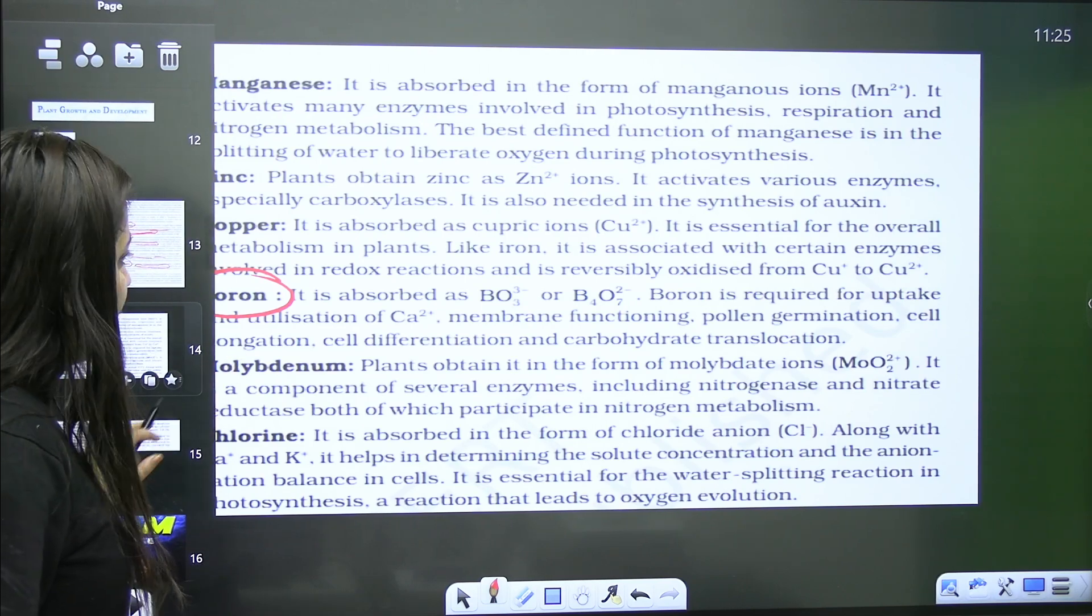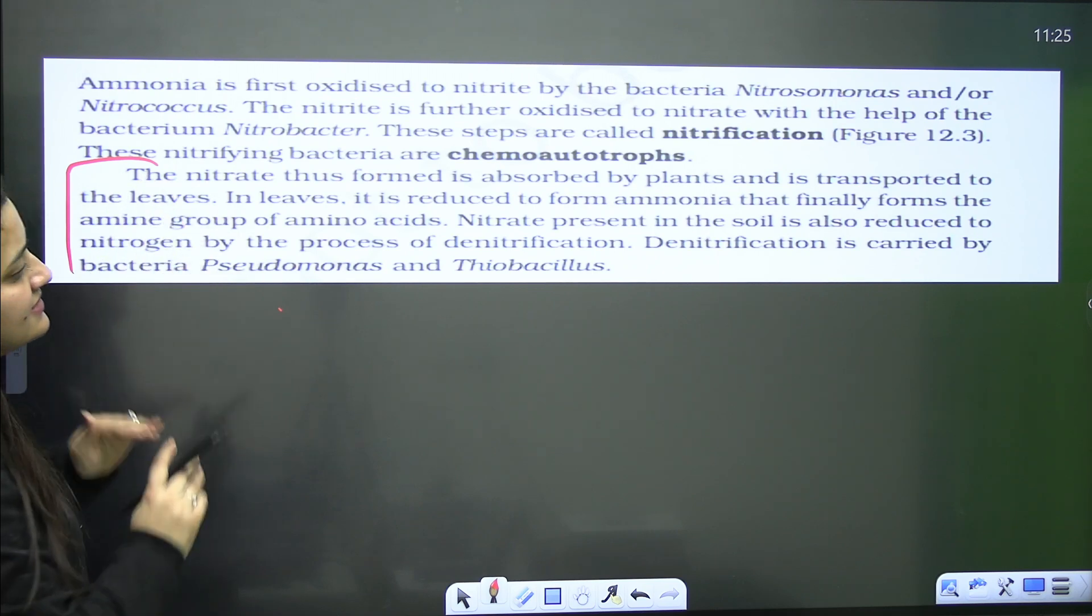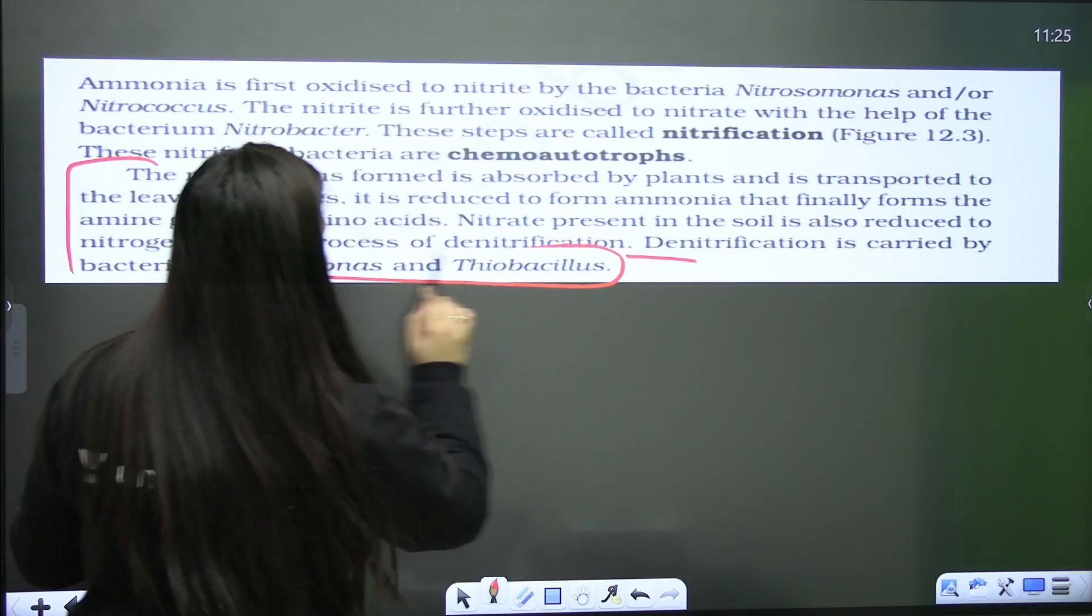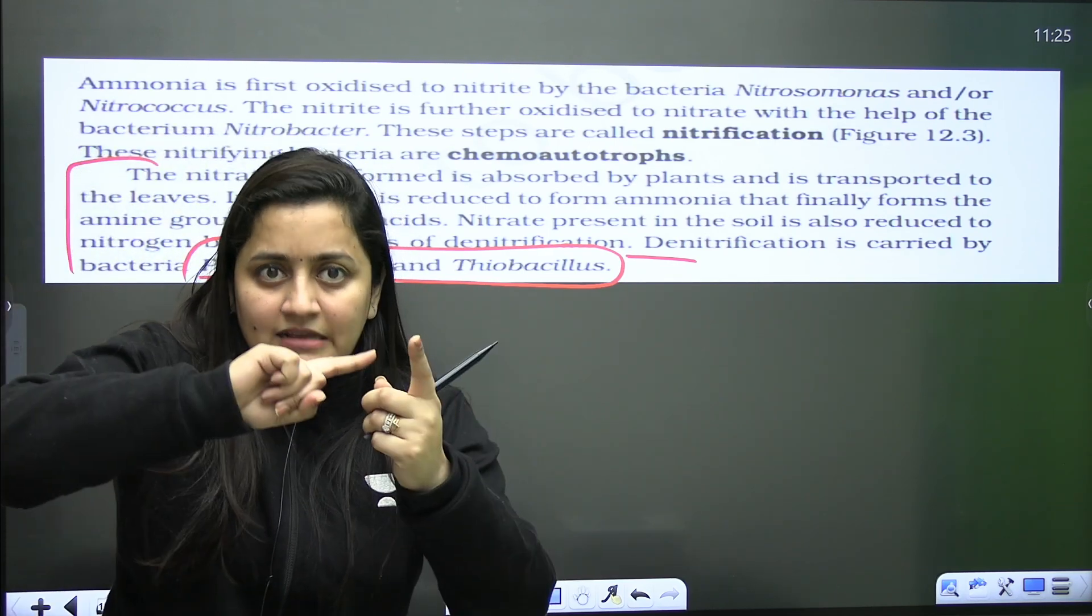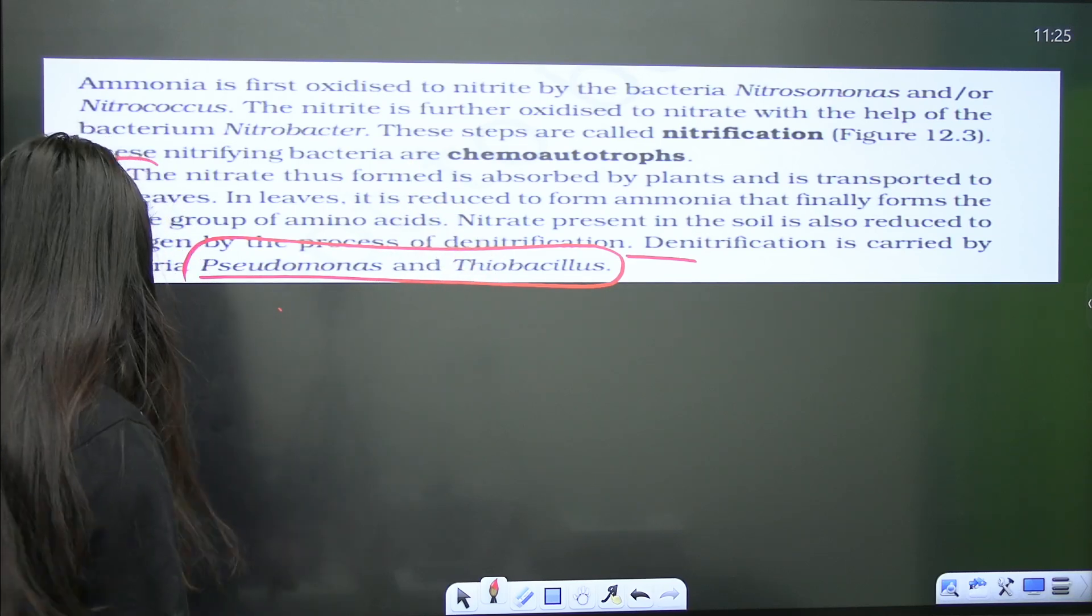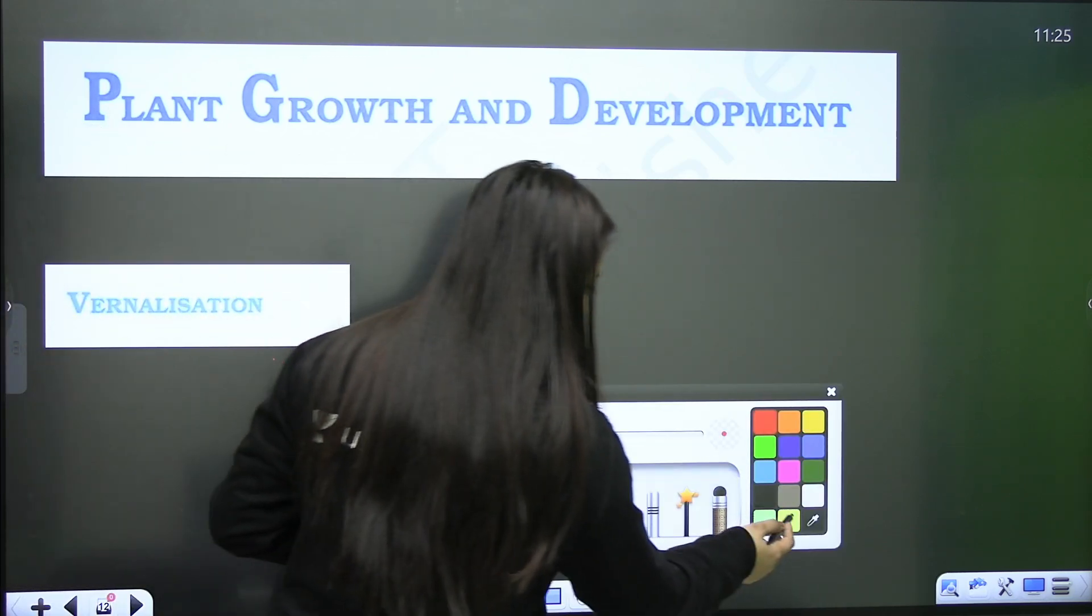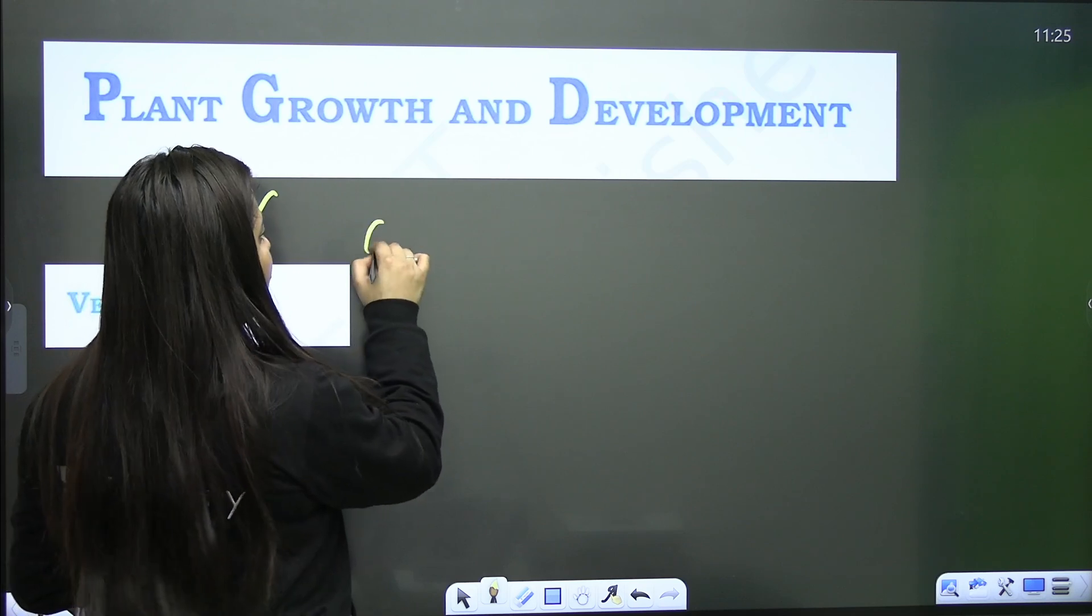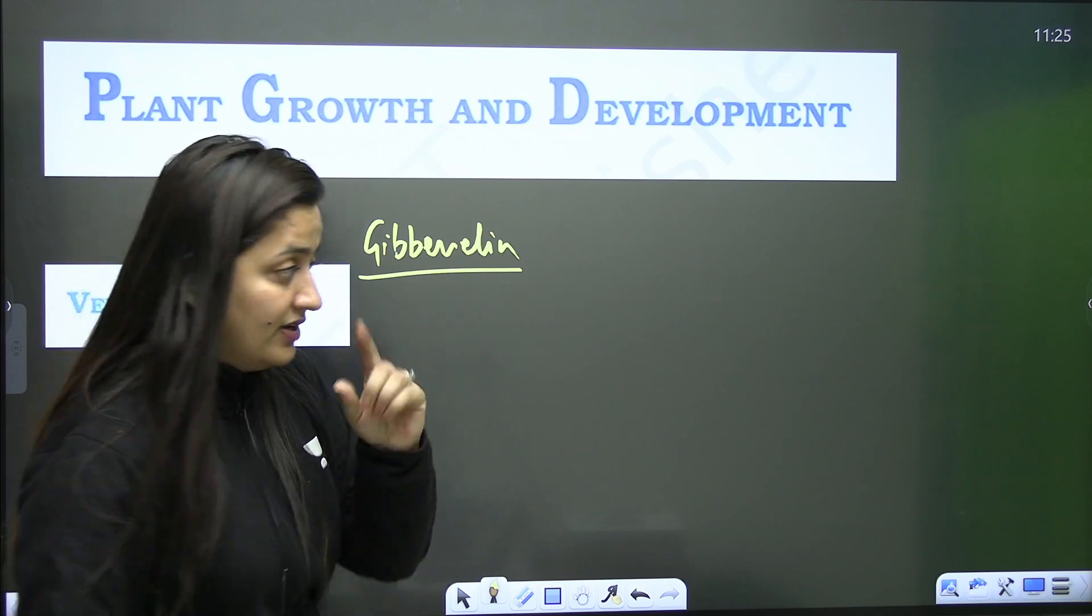Now from the same chapter, here the examples of bacteria are given for denitrification—Pseudomonas, Thiobacillus. Again, bacteria is still part of your syllabus, so in correlation, questions can come. Give it a reading, students. Now when it comes to plant growth and development, vernalization—you should not miss. Why? Because here the role of gibberellin is there, and gibberellin is still part of our syllabus. That is my advice.